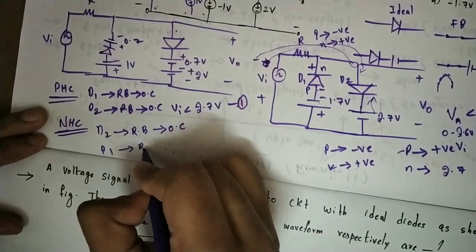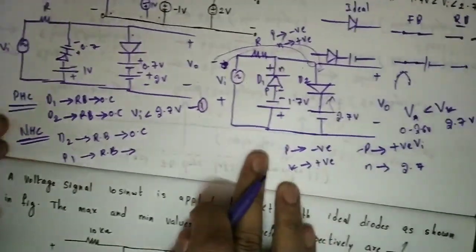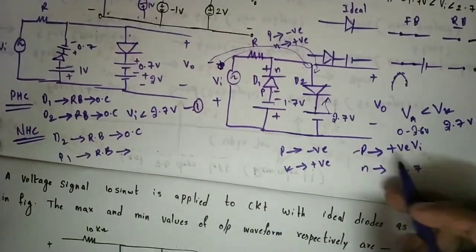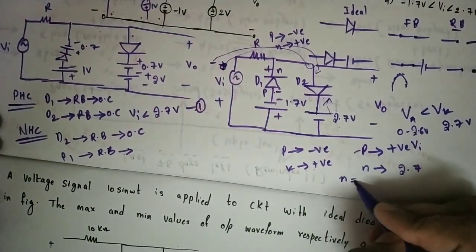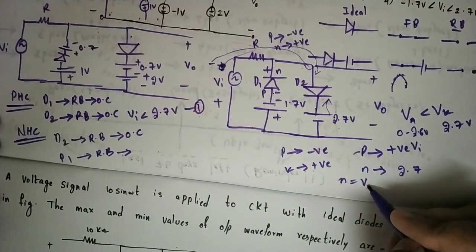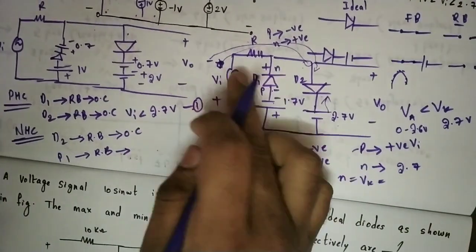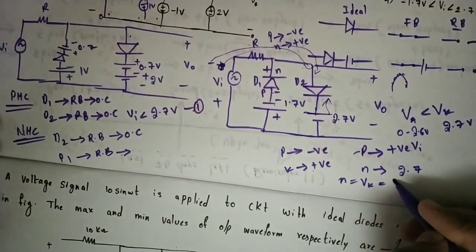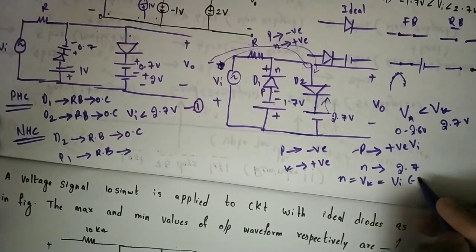In the negative half cycle, D1 may conduct. We need to determine the condition for D1 to remain reverse biased. The cathode voltage VK needs to be determined. VI is a negative value in this half cycle.